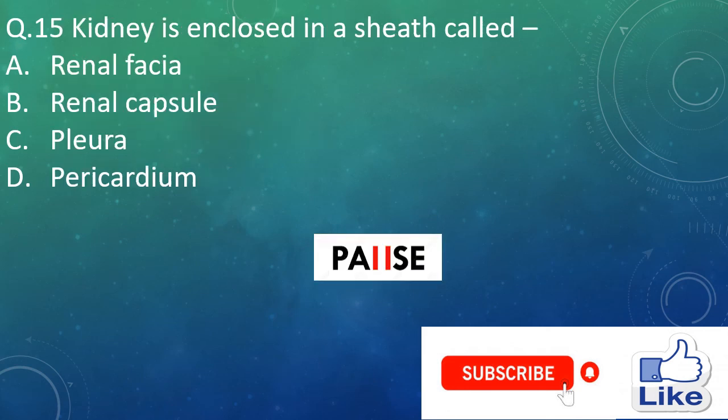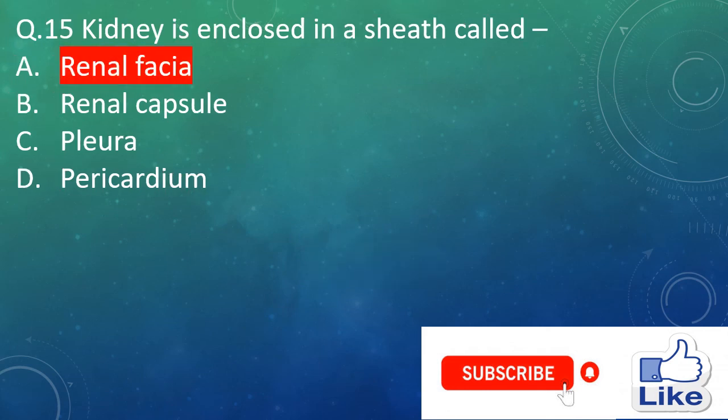Question 15. The kidney is enclosed in a sheath called — option A: renal fascia, option B: renal capsule, option C: pleura, and option D: pericardial. The right answer is option B, renal fascia.